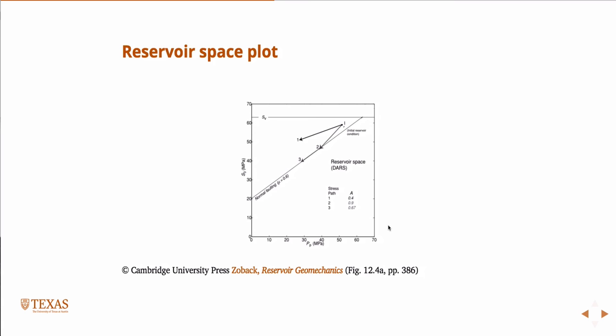So if you initially have a pore pressure in a reservoir of 50, and then you know what A is, and you just draw a line, and that's gonna tell you whether you're essentially gonna, through production, run into issues with faulting or not.